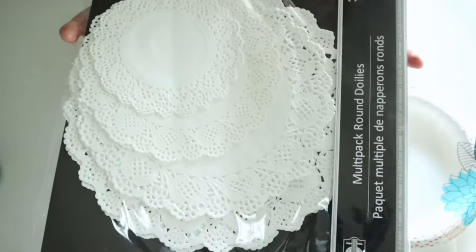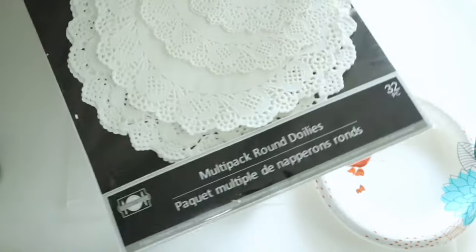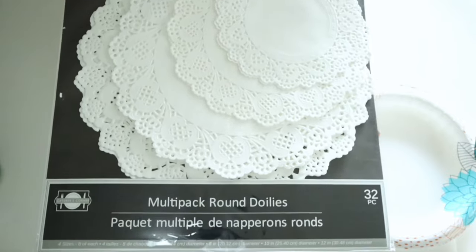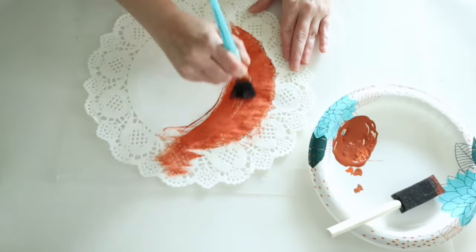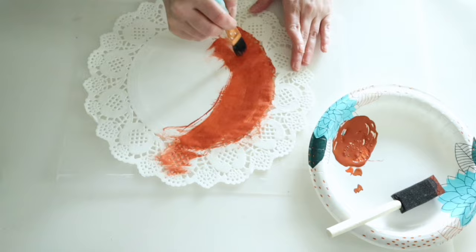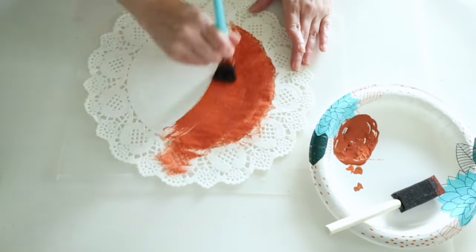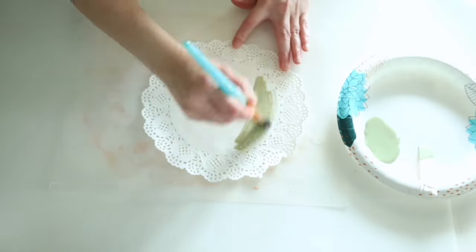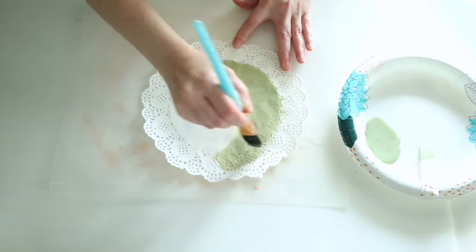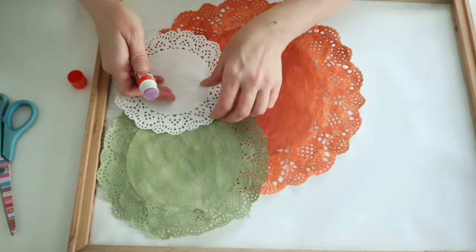Now also for this project, we're going to be using some of these Dollar Tree doilies and I got this pack of 32 from there. Now I just took one of the larger ones and I'm going to be painting that with this rusty orange color. Then I did a smaller one in this green color and left a small one the white color.